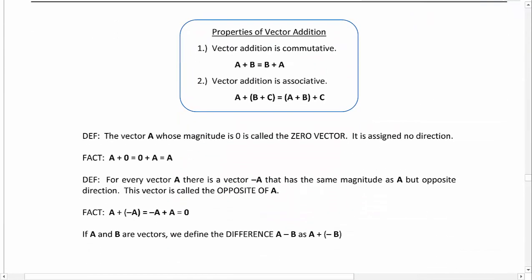So vector addition follows the same properties as addition of real numbers. Vector addition is both commutative and associative, so we can flip-flop the order or we can, if we're adding more than one together, add any two together first and then add the third one in.